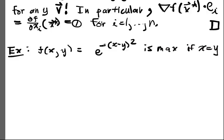this is maximum if x = y. Otherwise, I have e to the sum strictly negative number, which is lower than 1, which is what this will be if x equals y.